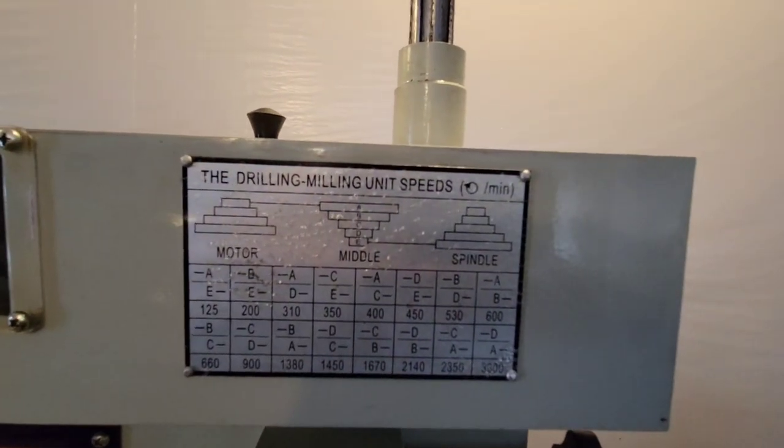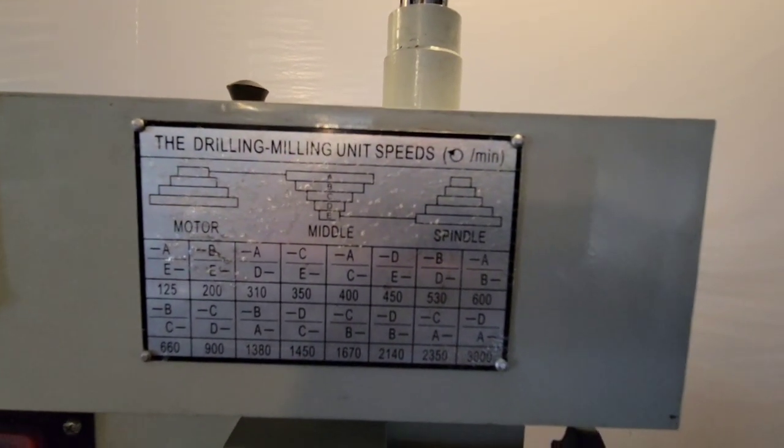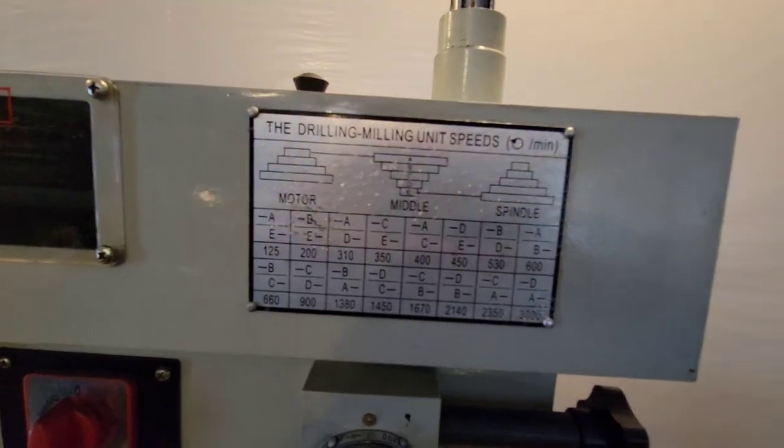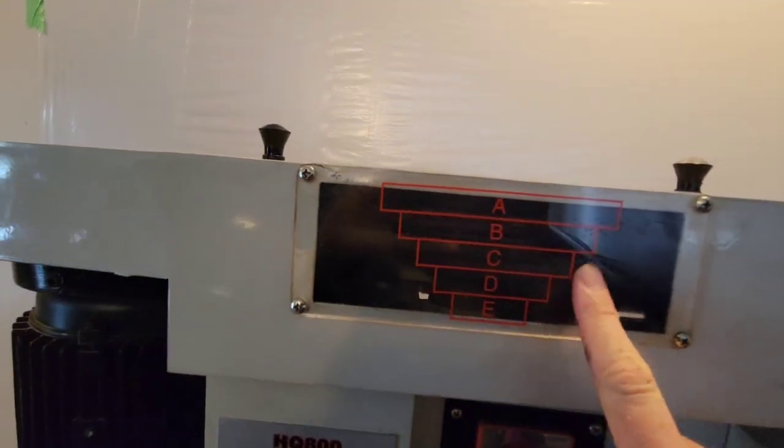Here's the different speeds of the mill that it has. You can change them by moving the belts inside over there.